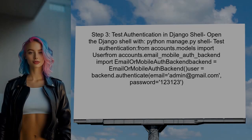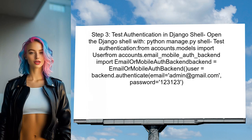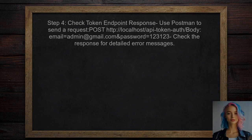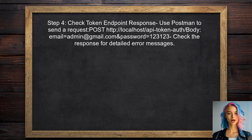Now, test the authentication process using the Django shell. This will help confirm whether the custom backend is functioning as expected — you can manually create a token for a user to see if the authentication works. Finally, if you're still facing issues, check the response from the token endpoint. Use a tool like Postman to send a request and see the detailed error message returned by the server.